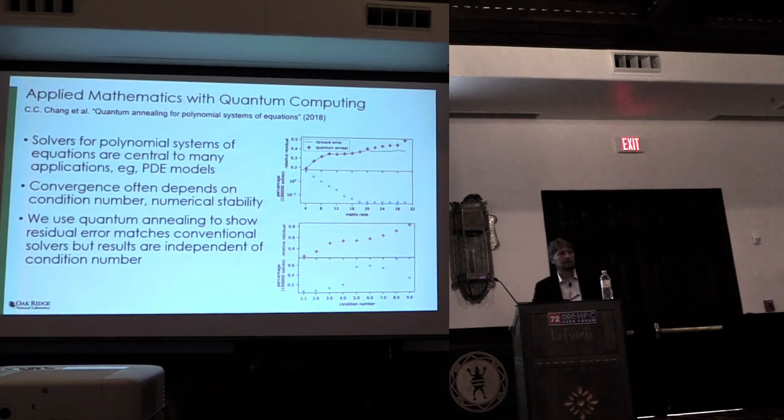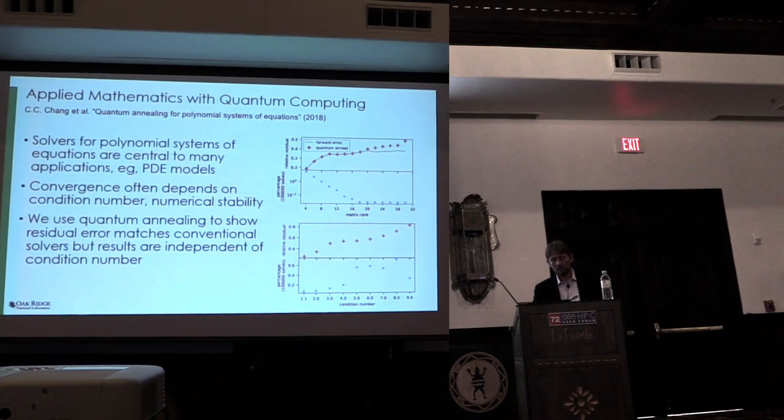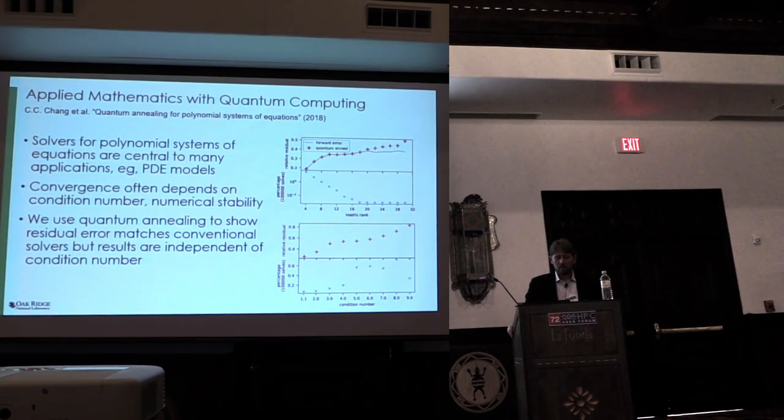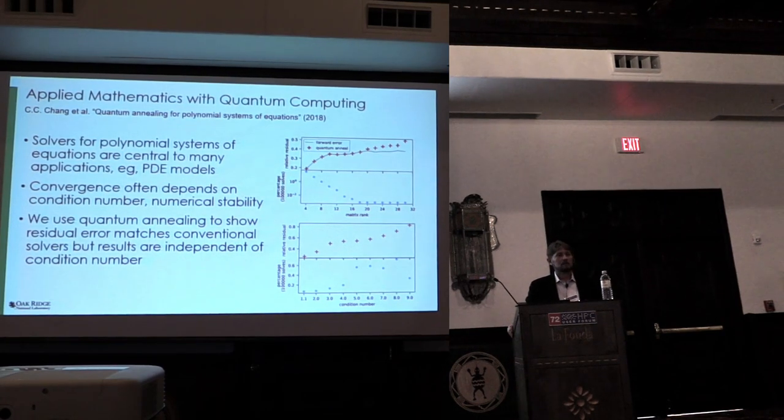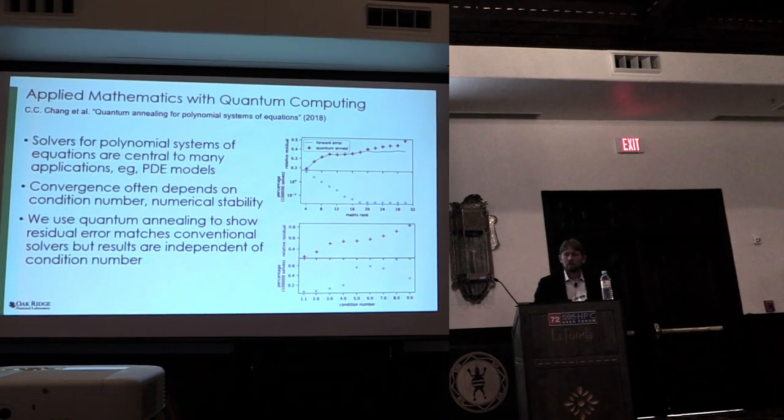Third application is in applied mathematics. This is using a quantum annealing system to actually solve a polynomial system of equations, something that we know is central to many PDE models. Here, convergence often depends on the condition number of the matrix, and there are many different methods out there using preconditioners to try to improve that. What we found using quantum annealing is that we can actually achieve similar residual error as conventional methods, but independent of the condition number, simply because it's a different approach. So this particular example and all the examples right now are sort of the state of the art in what we're able to do with quantum computing today. Seemingly small demonstrations, but indications of how we can grow over time.